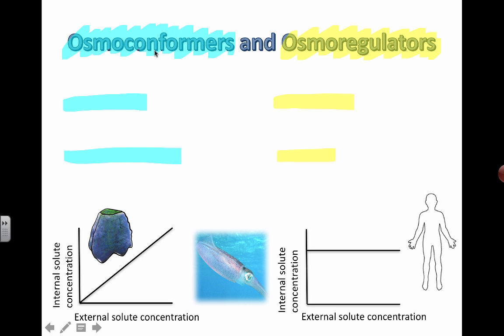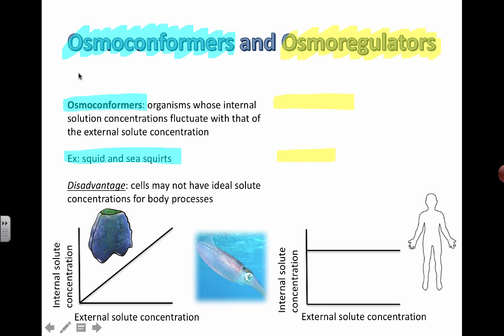With osmoconformers, you're matching your internal solute and water concentrations to be the same as the outside. By a more formal definition, an osmoconformer is an organism whose internal solution concentrations fluctuate with that of the external solute concentration — they tend to follow whatever is going on outside.